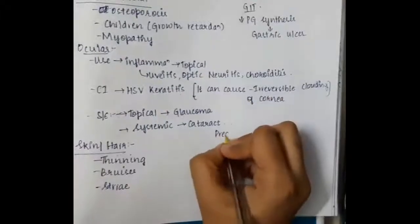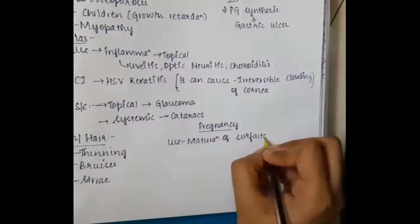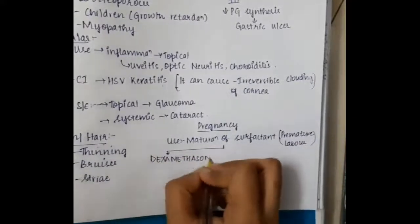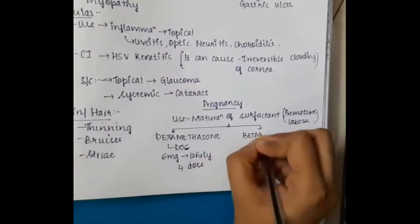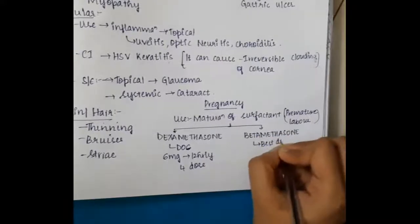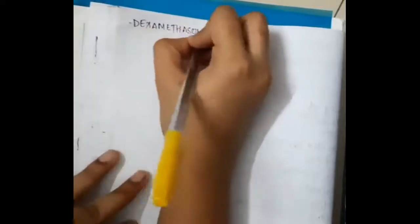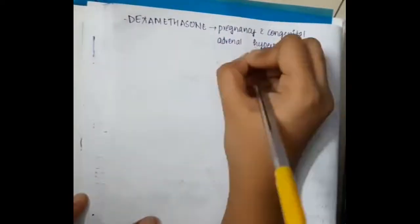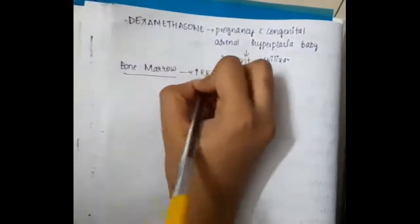In skin and hair, steroids cause thinning, bruising, and striae. In pregnancy, steroids promote maturation of surfactant in preterm labor. Dexamethasone is given as 6 mg for four doses, 12-hourly. Betamethasone is given as 12 mg for two doses, 24-hourly. Dexamethasone is also given in pregnancy with congenital adrenal hyperplasia to prevent virilization in babies.